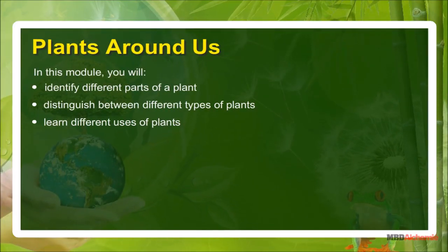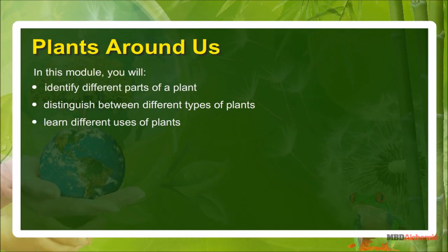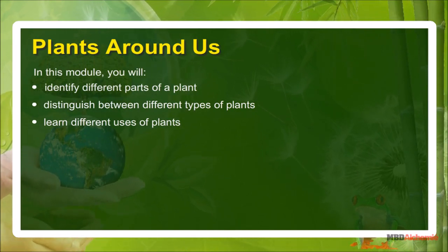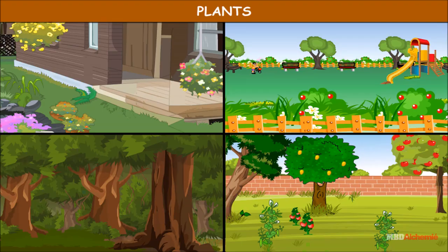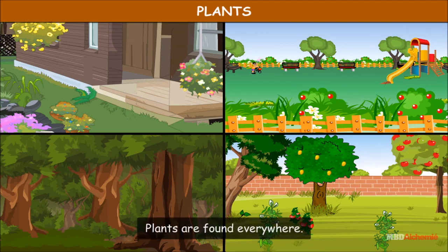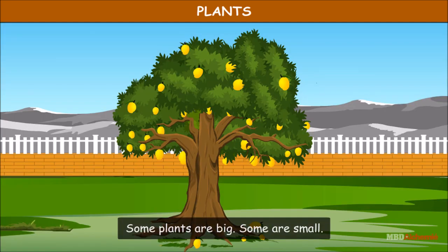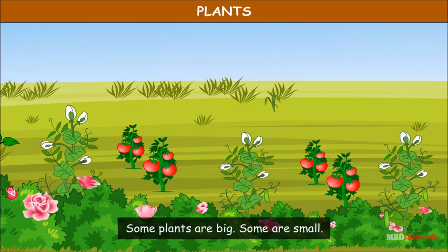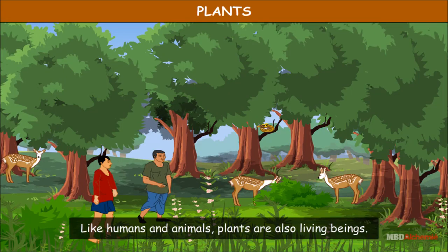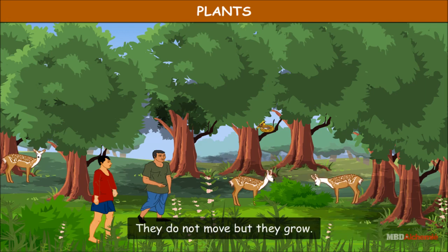In this module, you will identify different parts of a plant, distinguish between different types of plants, and learn different uses of plants. Plants are found everywhere and there are many kinds of plants — some are big and some are small. Like humans and animals, plants are also living beings. They do not move, but they grow.